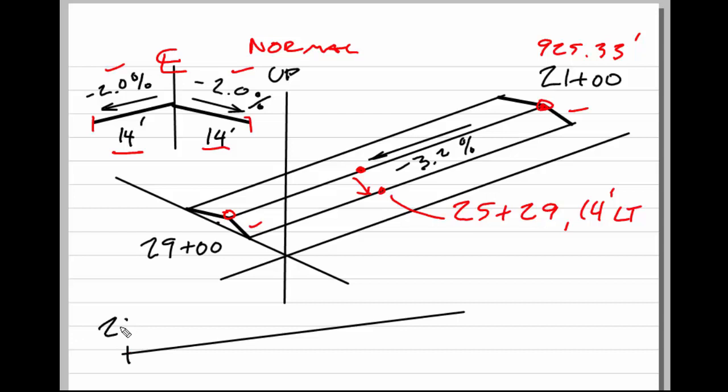I'm just drawing a profile here for clarity. If this is 29+00 on the left and 21+00 on the right, then 25+29 is going to be between them. We know we have a negative 3.2% slope. Well, first we need to know what is the distance from here to there.